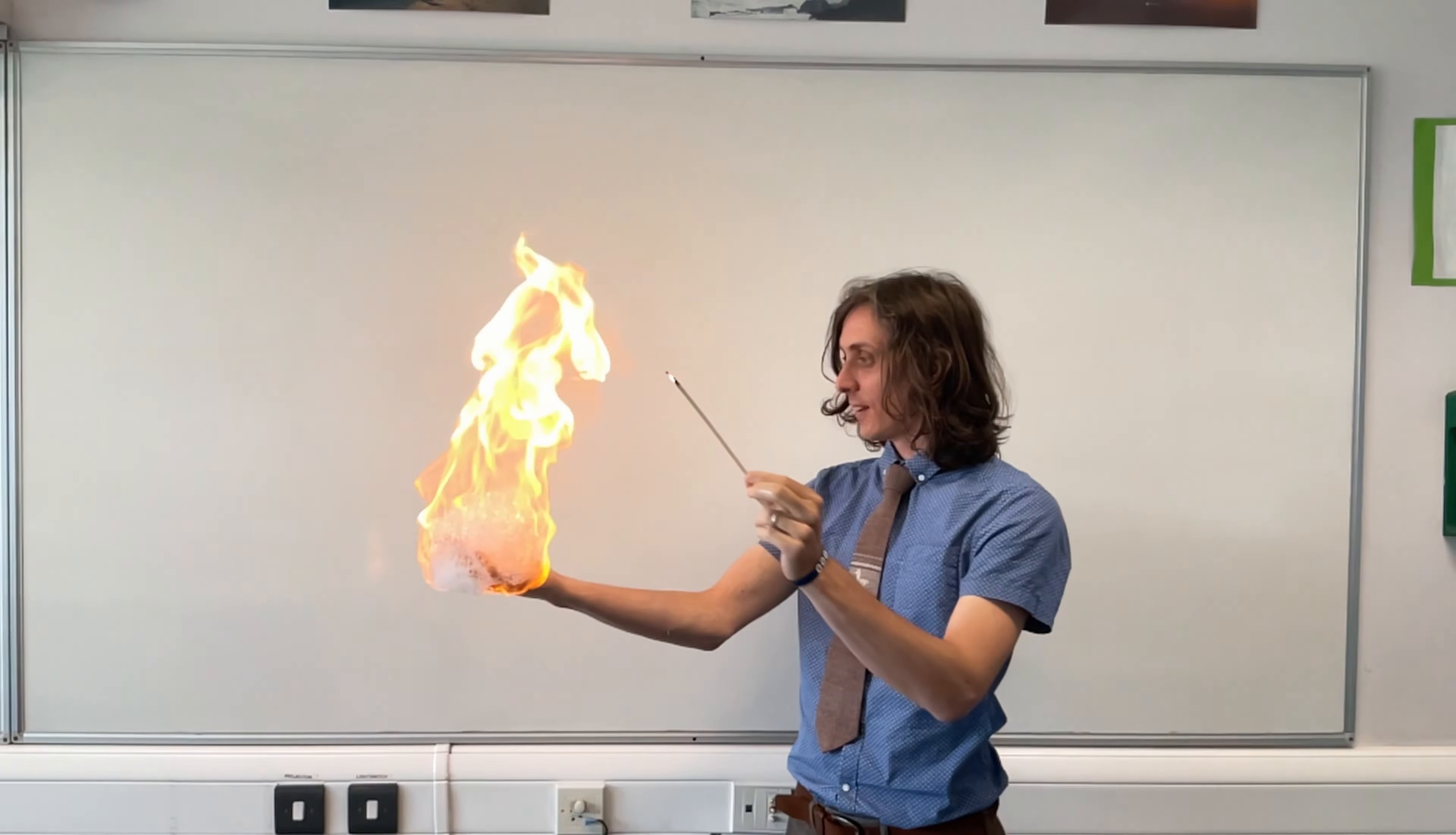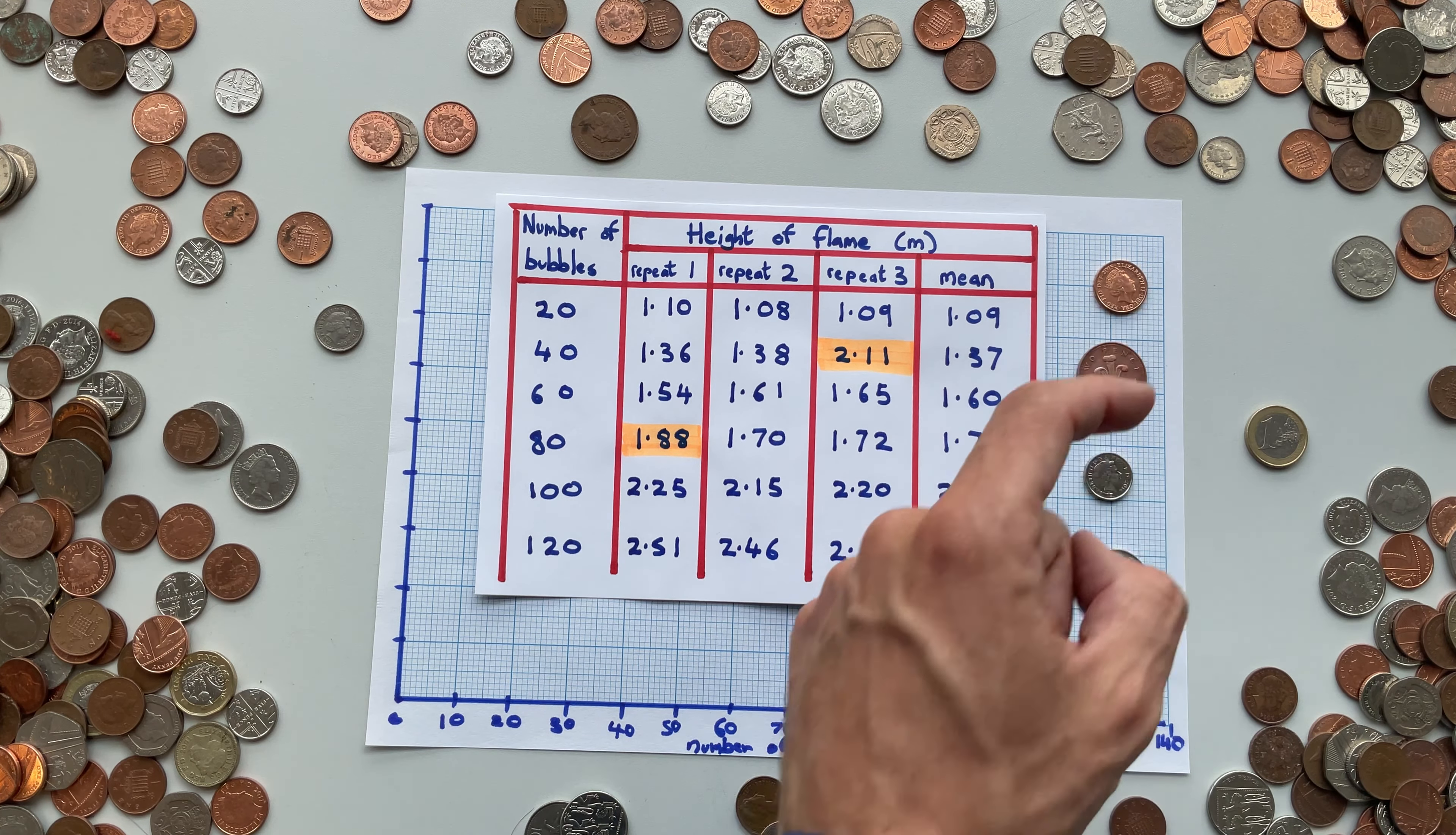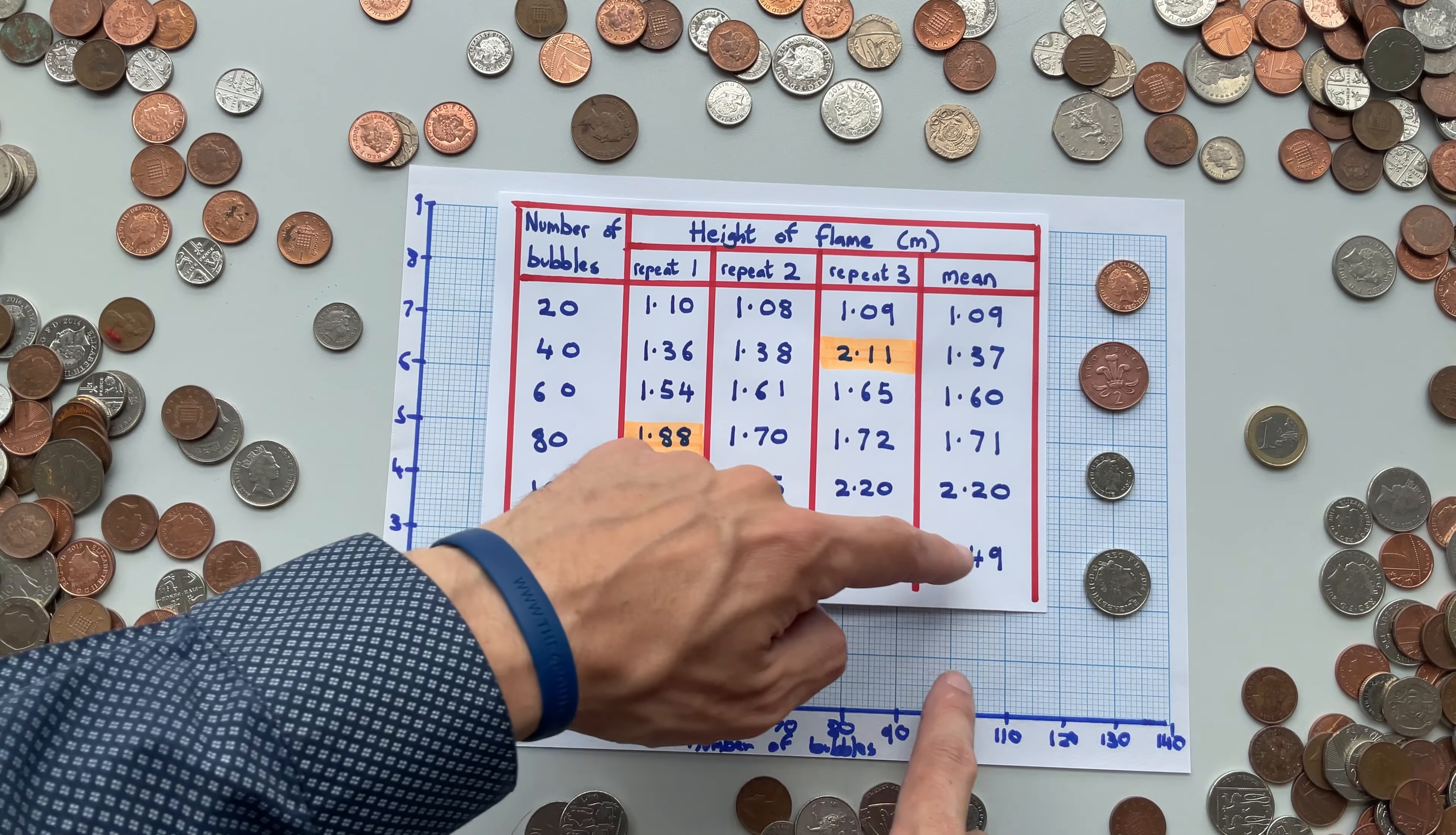The height of the bubbles is gonna be our dependent variable. Now, the scale for this is much trickier. First thing to know is we're gonna use the mean value and not the repeat readings. If we use the same trick as earlier, it looks like we need to go up in ones. But if we do that, it means all of our results are gonna be squeezed into this little area on the graph, and that's not right.